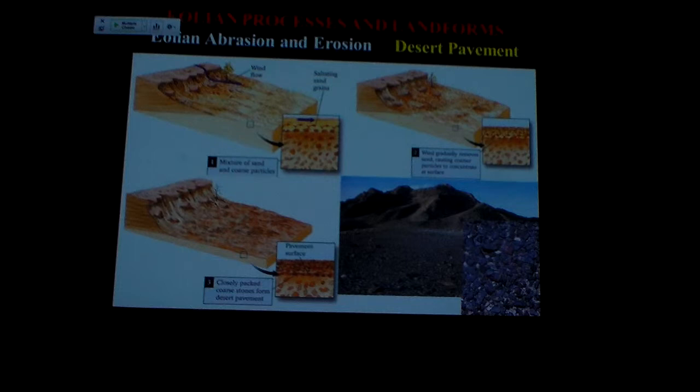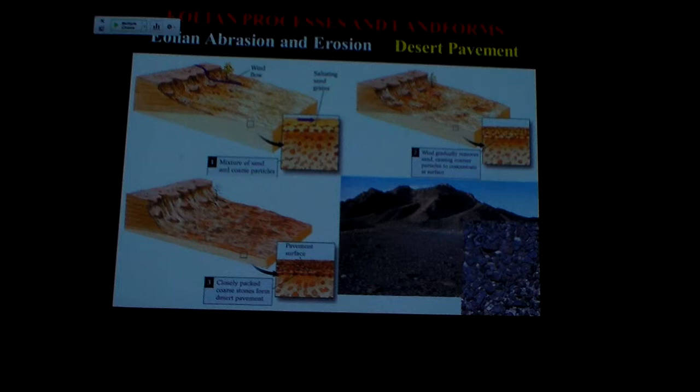We see the wind being able to pick up the fine material, but it's going to leave the coarser material behind. It takes more energy to pick up the heavy stuff. So the wind is kind of stripping the fine stuff out of the landscape, leaving the coarser material behind. And what we often see is a surface that almost looks like they came out with a bulldozer and pushed some gravel around and then ran a roller over it — it almost looks like a compacted gravel road.